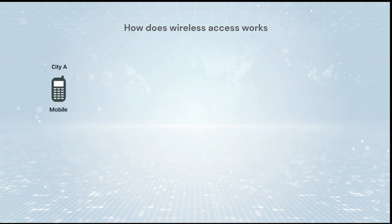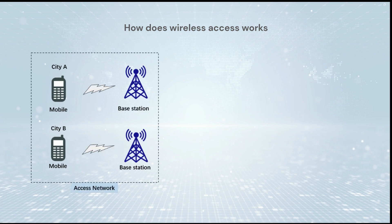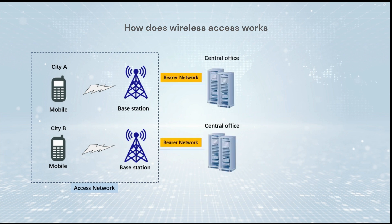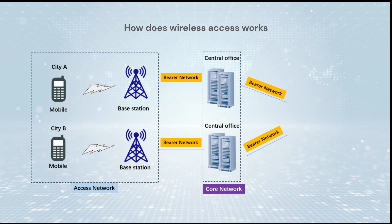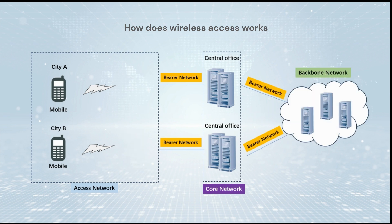How does wireless access work? When we make a phone call, the signal will be connected to the base station and then transmitted to the core network through the bearer network. After processing, the signal is transmitted to the other end-user in the destination city. A base station serves as a central connection point for a wireless device to communicate.